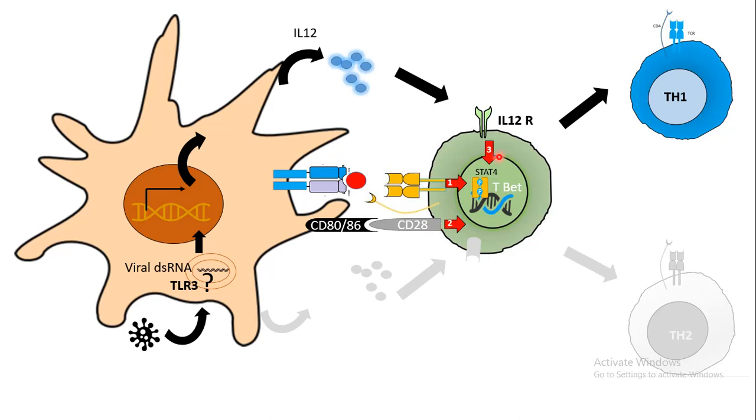A third signal comes from IL-12 and IL-12 receptor-mediated signaling. This third signal works downstream via STAT4. Phosphorylated STAT4 goes to the nucleus and transcribes master regulator genes like T-bet.